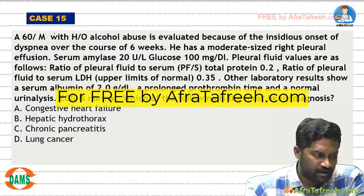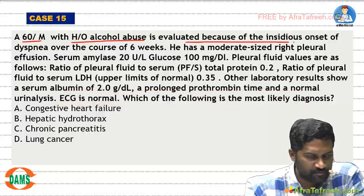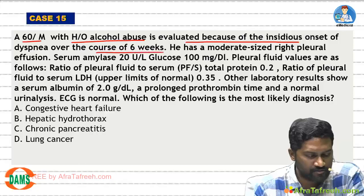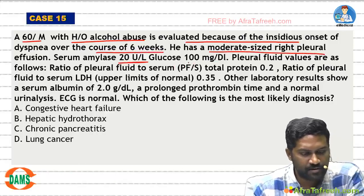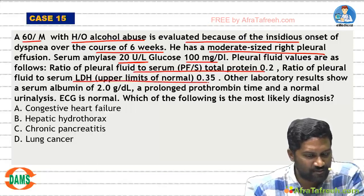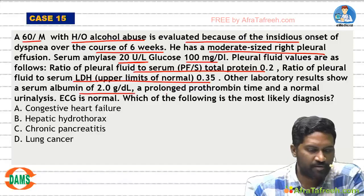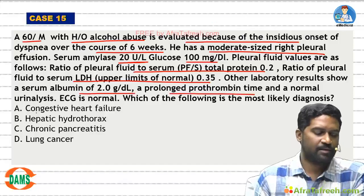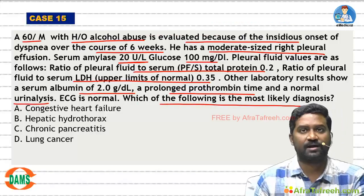Let us see this case. A 60-year-old male with history of alcohol abuse is evaluated because of insidious onset of dyspnea over course of 6 weeks. He has a moderate right pleural effusion, serum amylase 20 units per liter, glucose pleural fluid values are given. His protein ratio is 0.2, LDH ratio is 0.3. Other lab results show serum albumin of 2 gram per deciliter, prolonged prothrombin time, normal urine analysis, ECG is also normal. Which of the following is the most likely diagnosis?